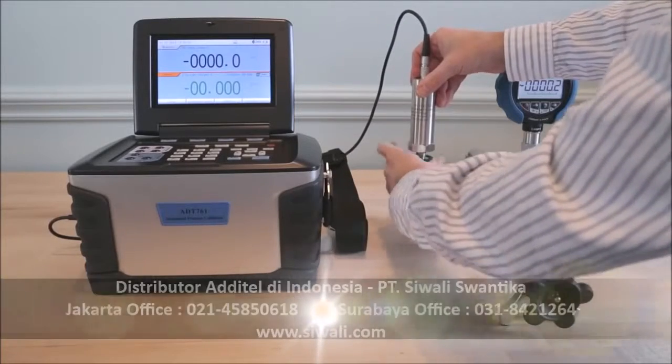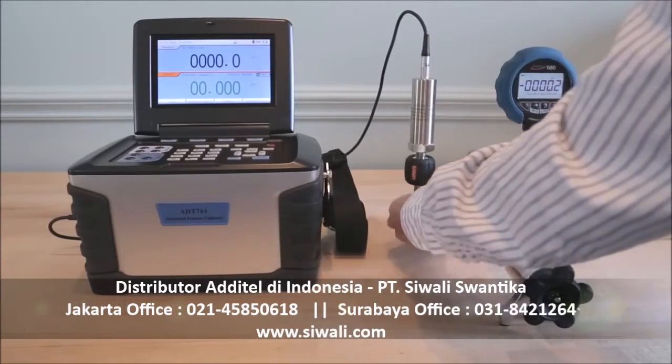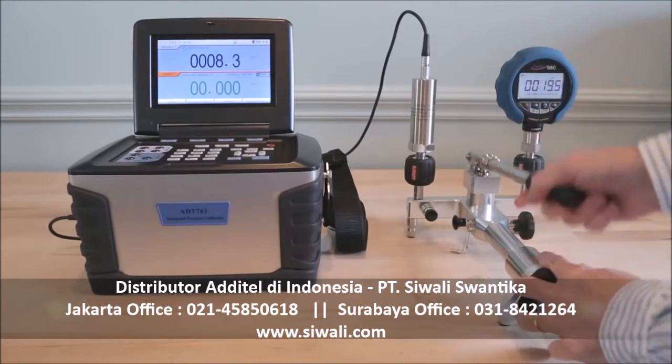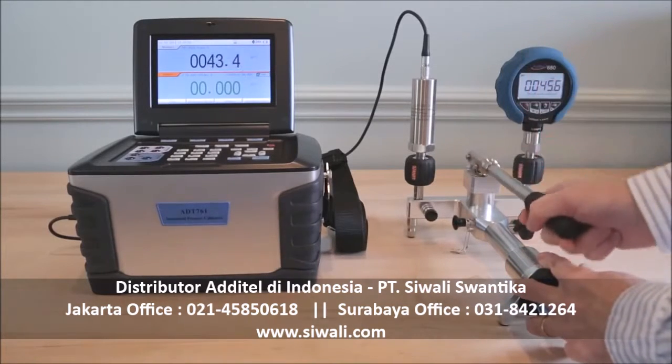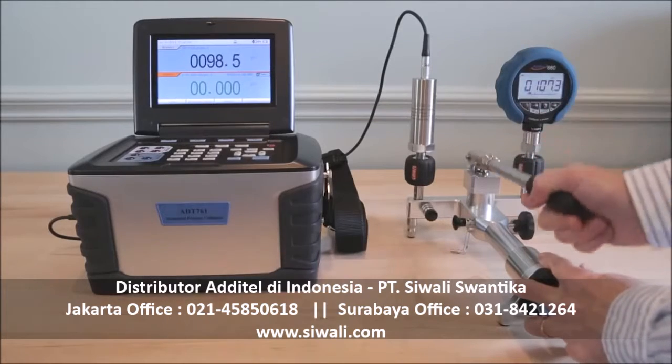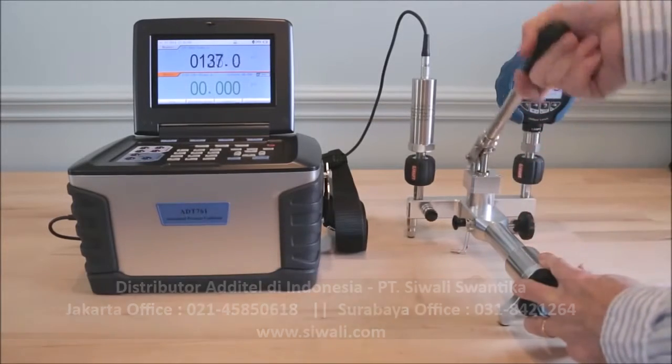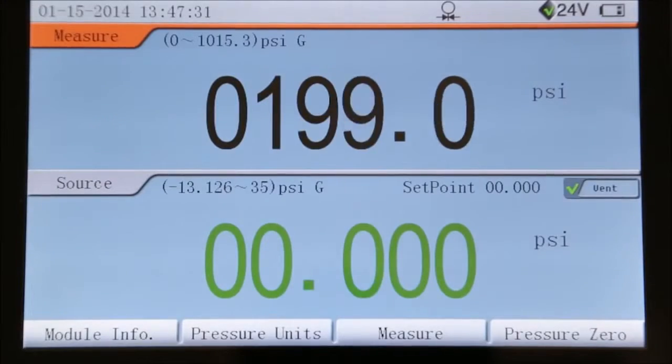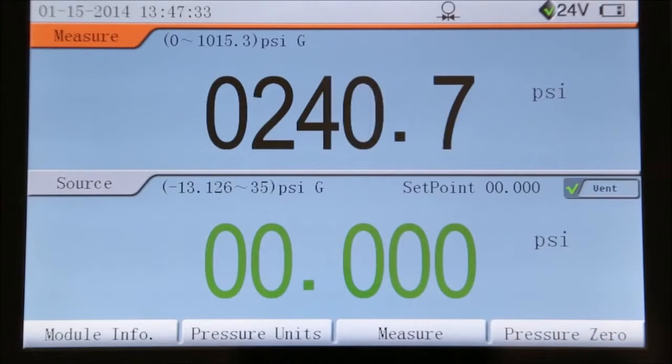With optional external pressure modules, the 761 can measure pressures up to 10,000 PSI with 0.025% accuracy. External pumps can be used for generating pressures above the 761 range and pressures can be displayed on the 761 screen.